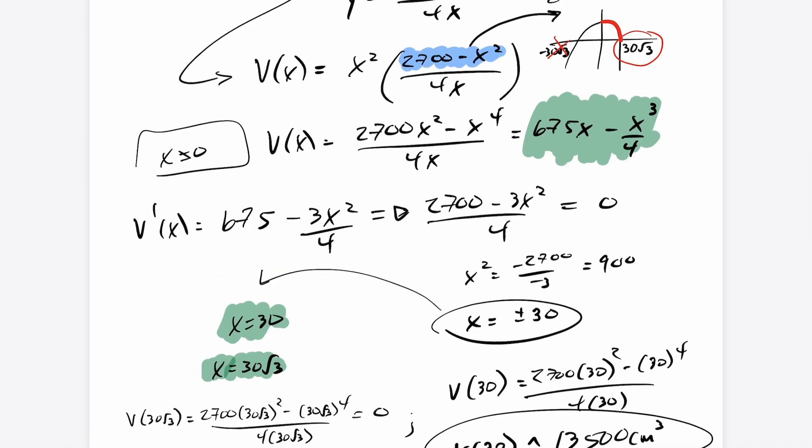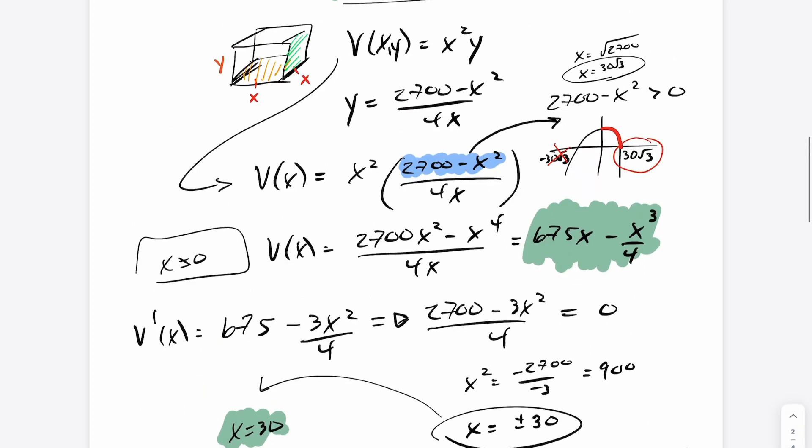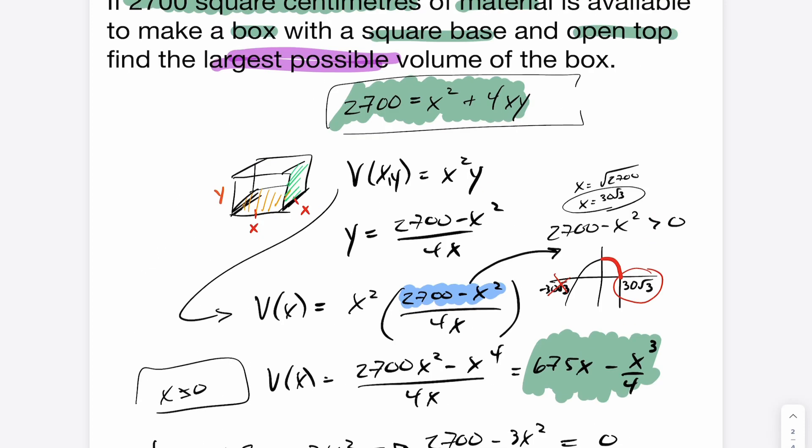So the question was asking for the actual dimensions of the box here. So this is the max. The max happens when X is 30. We've eliminated the minus 30 because you can't have negative length. The only other endpoint to consider was the 30 root 3, which we got from our constraints here. That's also out. It yields a volume of 0. So the only answer here is X is 30.